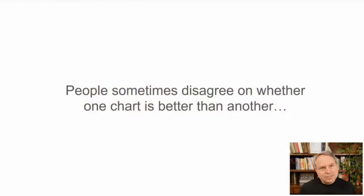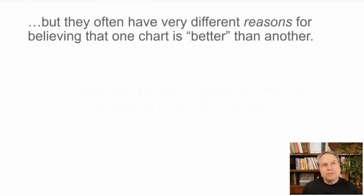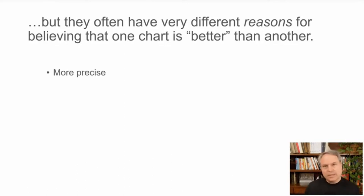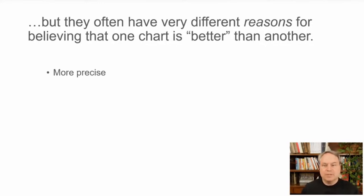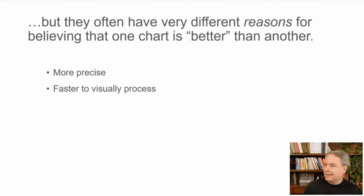When people disagree on whether this chart is better or worse than another chart, they often have very different reasons for believing that. For example, people will often say that one chart is better because it's more precise — it allows people to visually estimate and compare values more precisely than an alternative design. Many data visualization studies are based on this idea. Others say that if a chart is quicker to visually process, that makes it better, and there are lots of data visualization studies that measure how quickly people can read a given chart design.